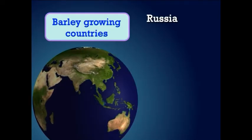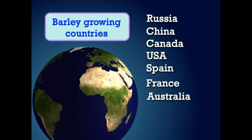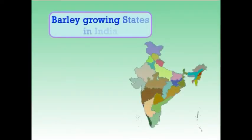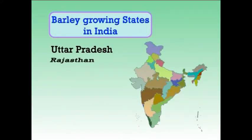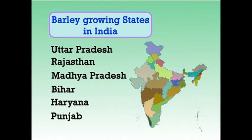Barley is one of the major cereals of the world. The important countries growing this crop are Russia, China, Canada, USA, Spain, France, Australia, UK, and India. Russia ranks first in area as well as production, followed by China. In India, it is cultivated on a commercial scale in Uttar Pradesh, Rajasthan, Madhya Pradesh, Bihar, Haryana, and Punjab.